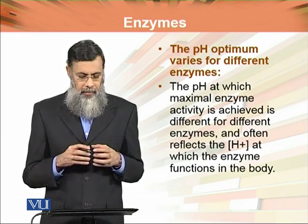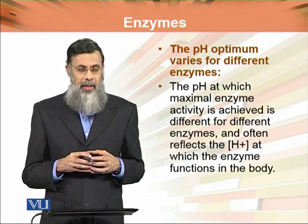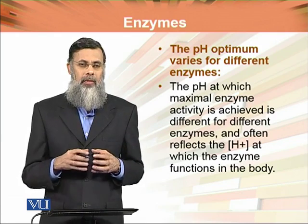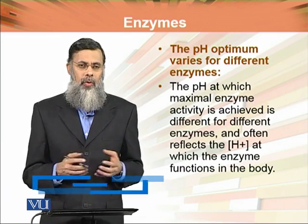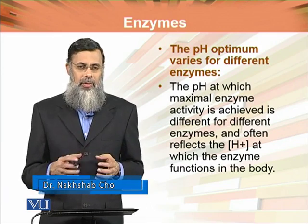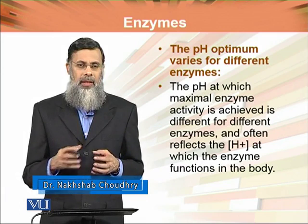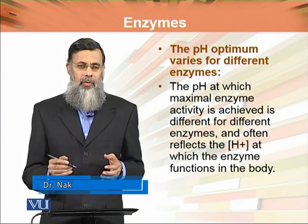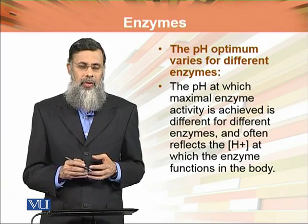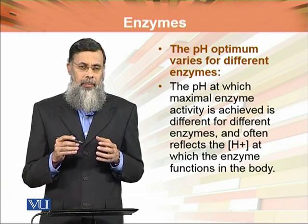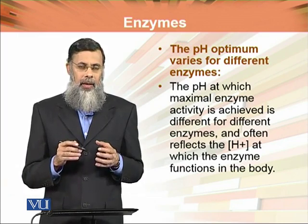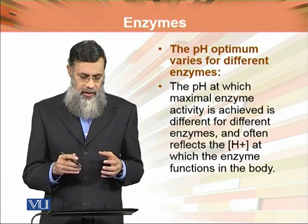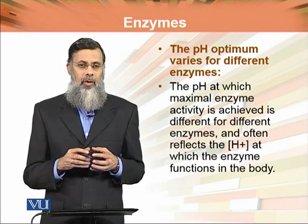Maximum enzyme activity ke liye har particular enzyme ki apni particular pH hai. Or pH, as we know, is the concentration of hydrogen ions. Toh jis tarah hydrogen ions ki concentration increase ya decrease hoti hai, usi tarah us particular enzyme ki activity bhi increase ya decrease hoti hai. And it is maximum at the pH for which that enzyme is designed to work.